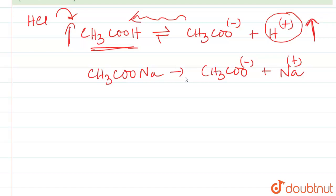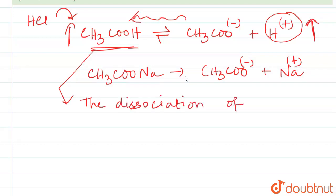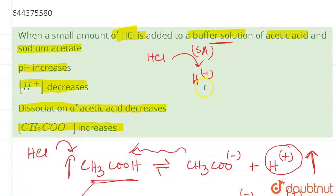The excess H+ ions will be diminished this way as the equilibrium moves backward. So what we see is that when HCl is added, the dissociation of CH3COOH decreases. This is our correct answer.